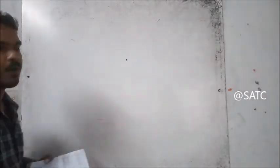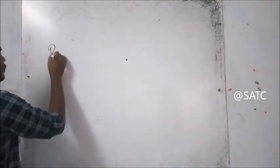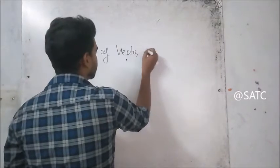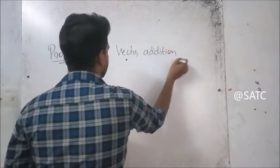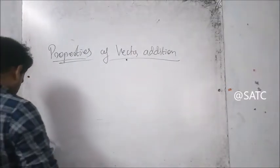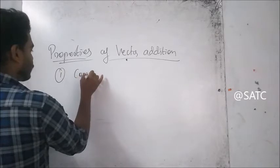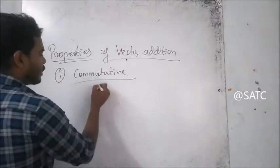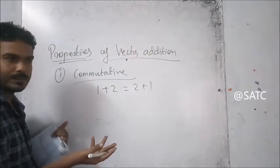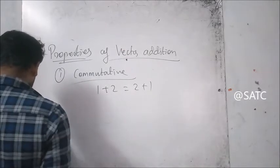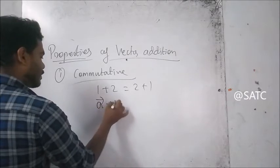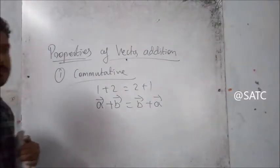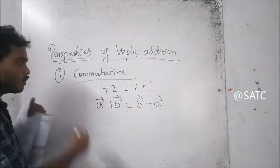The properties of vector addition. One of the properties is the Commutative property. What is the commutative property? One plus two is equal to two plus one — this is the commutative property. Vector A plus Vector B equals Vector B plus Vector A. Commutative property.